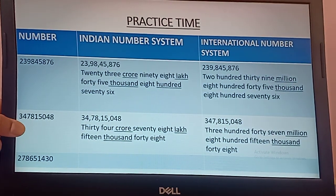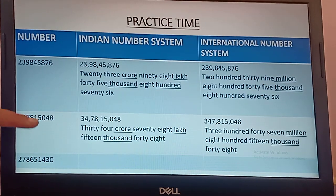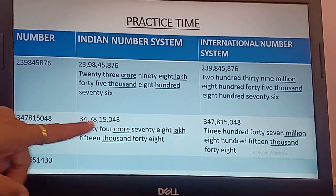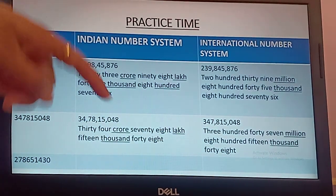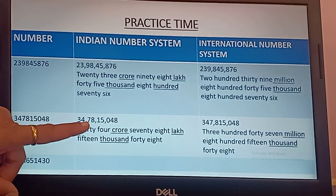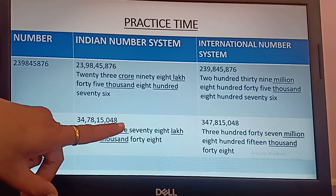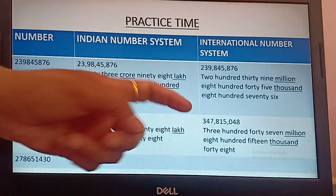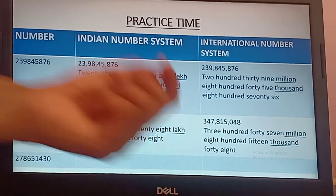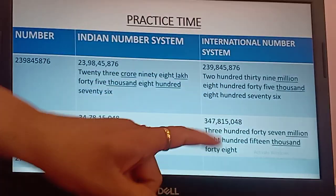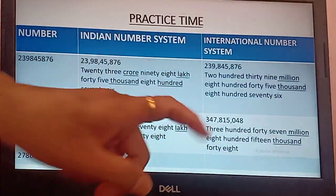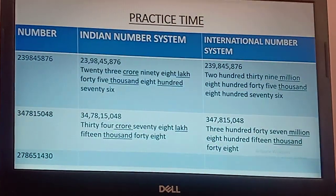Now we take another number. We split it according to Indian number system: 3, 2, 2, 2 and we put the commas — ones group, thousands group, lakh group, crore group. The number reads: 34 crore 78 lakh 15,048. In international number system, we split in groups of 3, 3, 3 digits each — ones group, thousands group, millions group: 347,815,048.